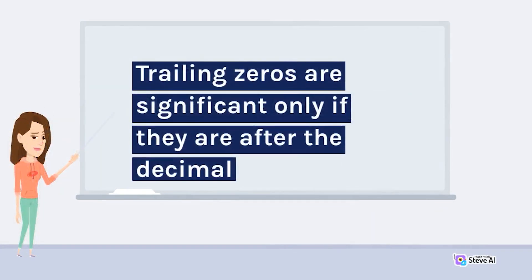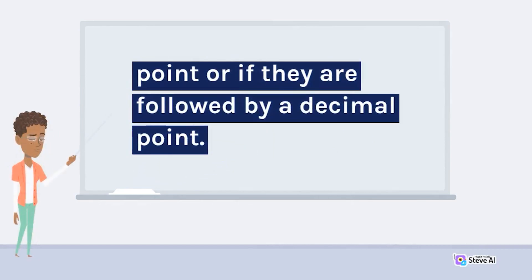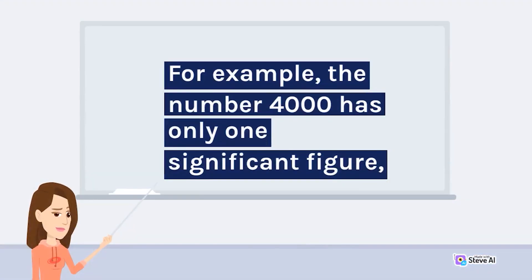Trailing zeros are significant only if they are after the decimal point, or if they are followed by a decimal point. For example, the number 4000 has only 1 significant figure.